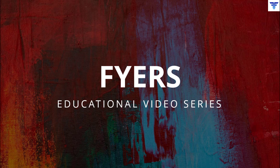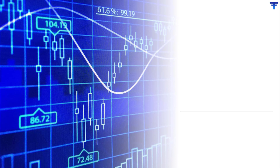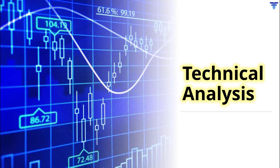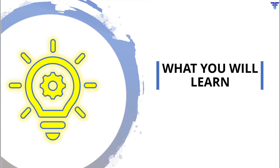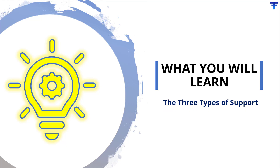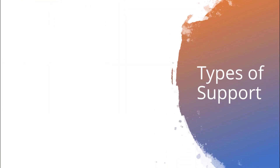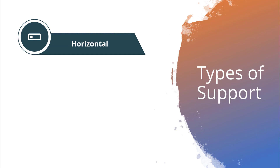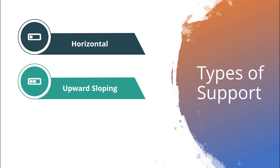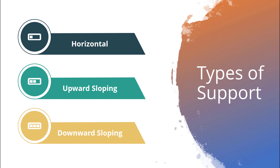Welcome to FHIR's educational video series. In this video tutorial, we will continue with our discussion on technical analysis. By the end of this video, you will know the three different forms in which a support can appear on charts. Generally, a support could take any one of the following three shapes: horizontal, upward sloping to the right, or downward sloping to the right. Now, let us discuss each of these forms of support.